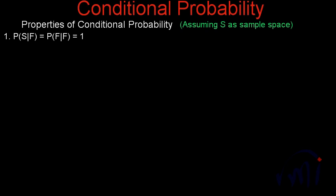The first property is: probability of S where F has already occurred equals probability of F where F has already occurred, and both equal 1. It's very simple - S is a sample space.